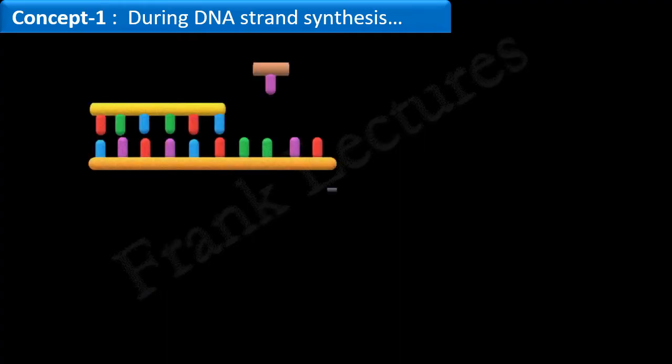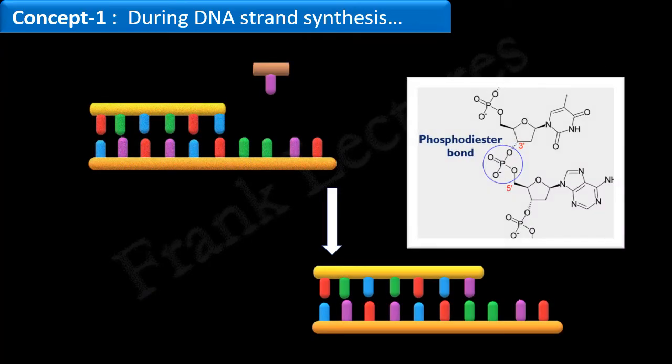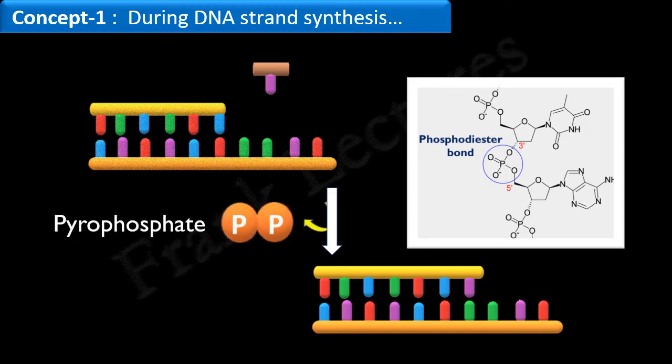During DNA synthesis, a phosphodiester bond is formed between the last nucleotide of the growing strand and the incoming complementary nucleotide. As a result, pyrophosphate is released. Thus, every time a complementary nucleotide is incorporated in a strand being synthesized, a pyrophosphate will be released.